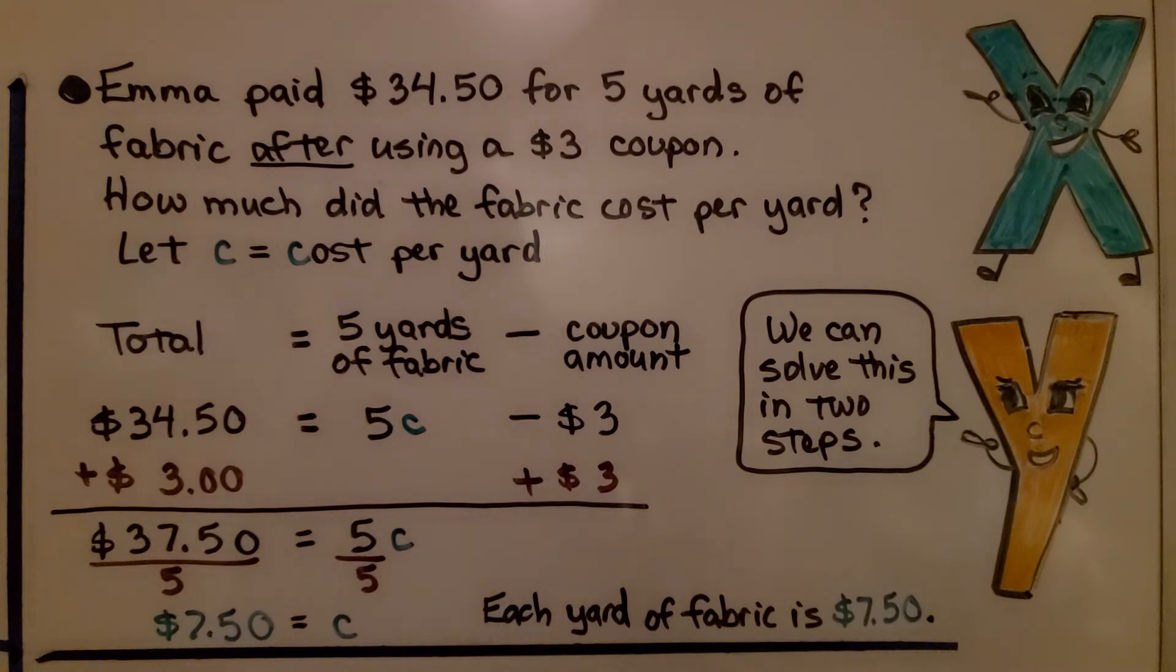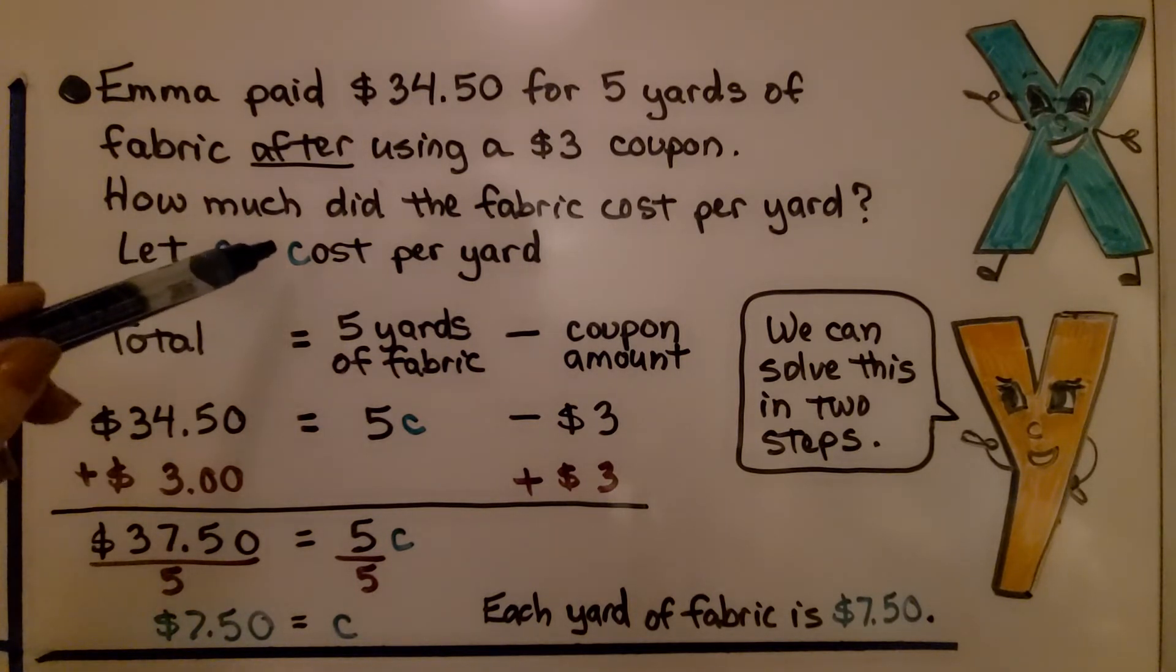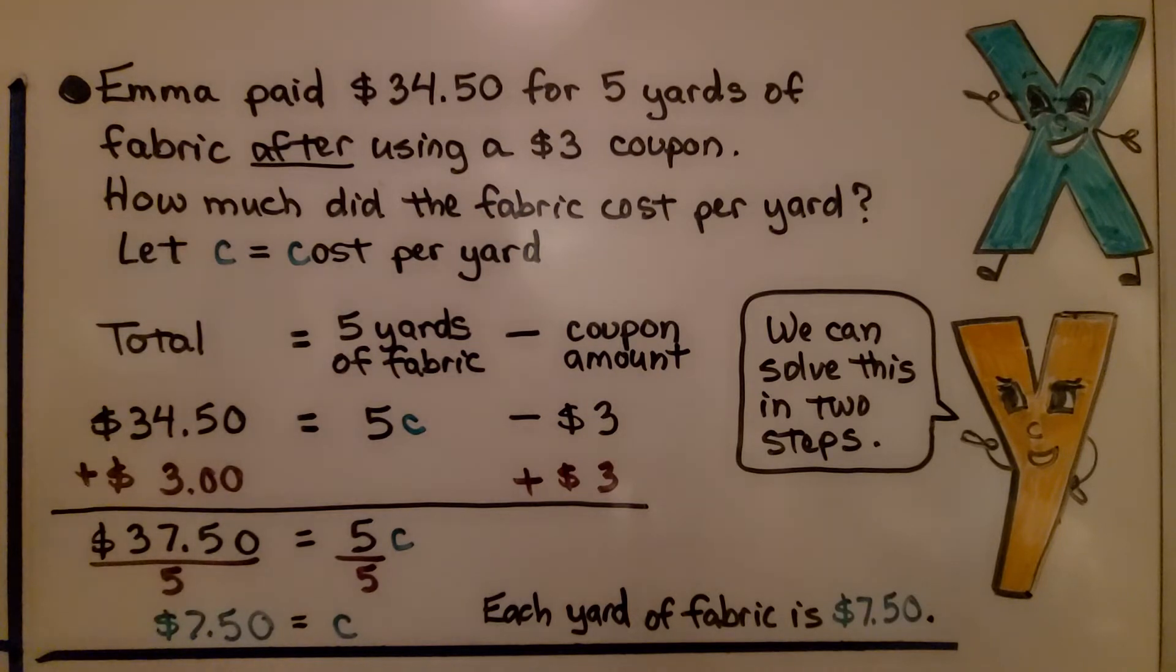Let's try this one. It's a little bit different. Emma paid $34.50 for 5 yards of fabric after using a $3 coupon. How much did the fabric cost per yard? So we're going to let C equal cost per yard. We also could have used Y for yard or F for fabric. But let's try using C for cost per yard.